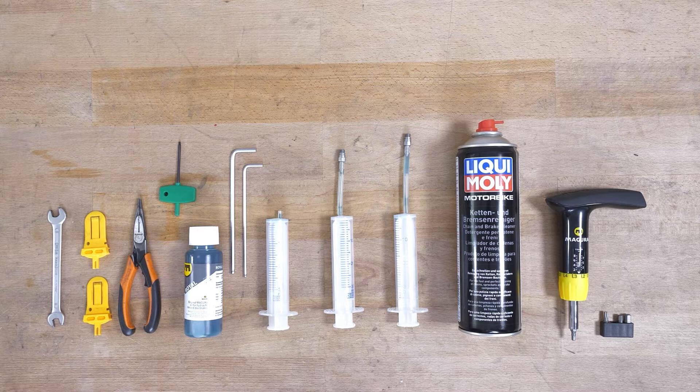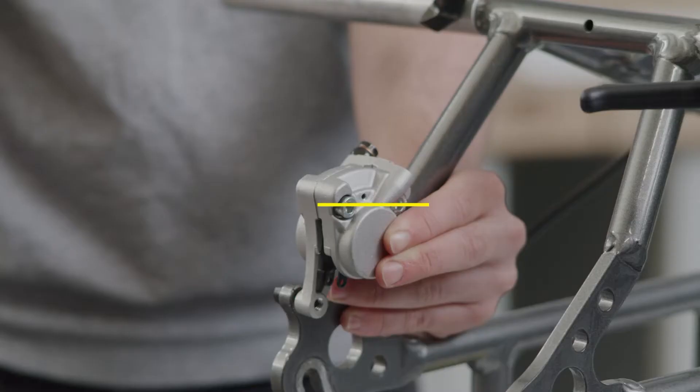In the following, you will need two or three brake bleeding syringes, depending on the model. First, push the pistons of the brake caliper back to their starting position. If you are working with a twin brake system, repeat this step with the second caliper.